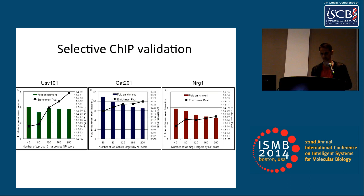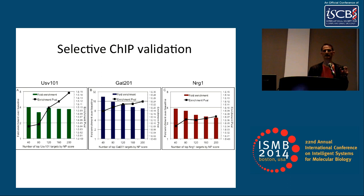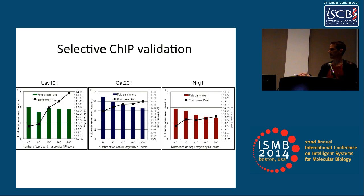We were confident NETPROFIT worked well based on Saccharomyces cerevisiae data, but we wanted to spot check the network in Cryptococcus. We looked at three transcription factors: GAT-201, the only one for which CHIP data was available, and USV-101 and NRG-1, for which the Deering lab carried out CHIP-seq. For the top 40 NETPROFIT-predicted targets of each transcription factor, we calculated how enriched they were for CHIP-positive targets relative to random. For NRG-1, the top 40 targets were about four-fold enriched for CHIP hits; for GAT-201, about 25-fold; and for USV-101, also about four-fold.